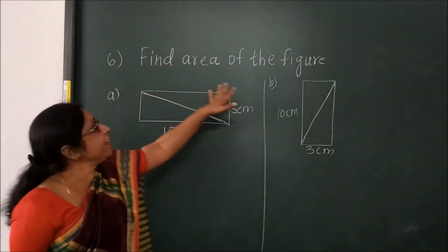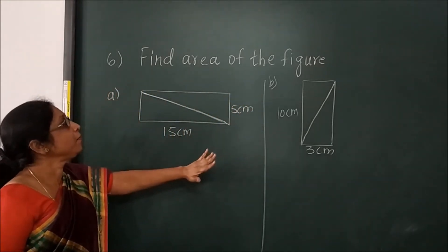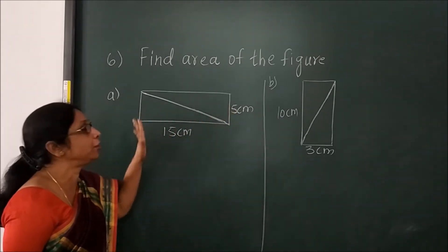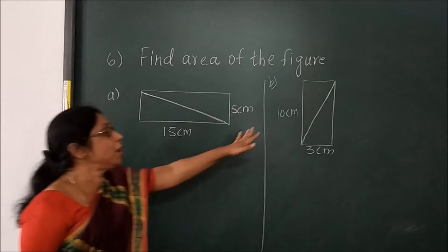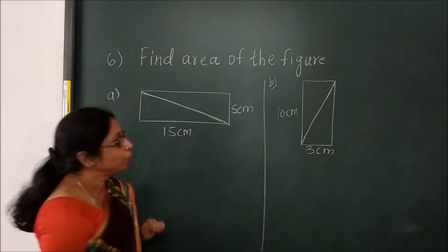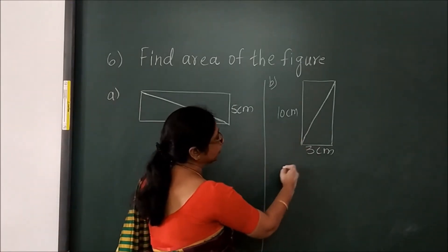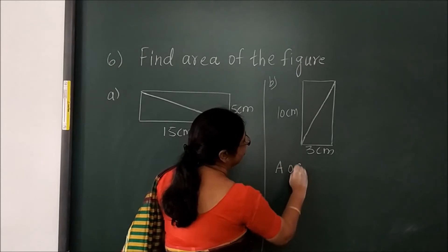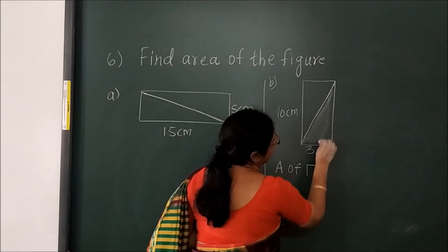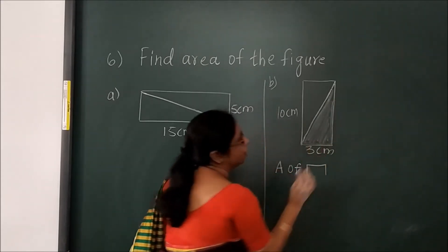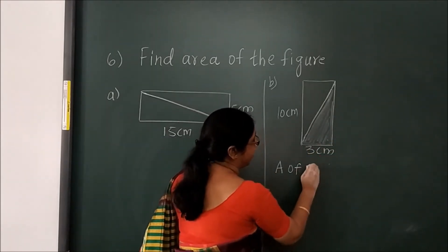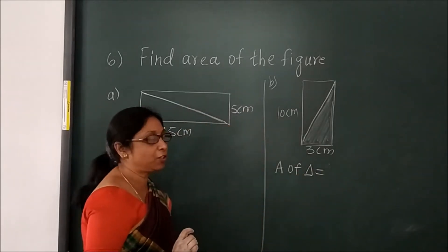Now you have to find the area of the figure. The figure is given. Here you can see the length and breadth are different, so that means you have to find the area of a rectangle. This is the shaded figure. To find the shaded area within the rectangle, first you will find the area of the right triangle.